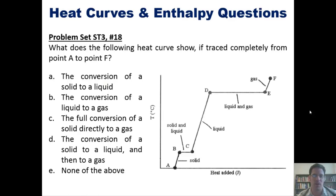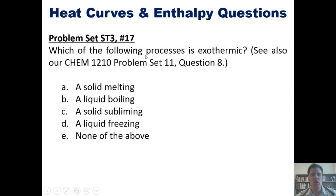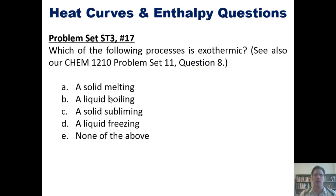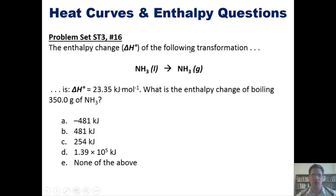I'm not going to answer that for you, but I invite you to think through it and come up with the answer on your own. Here's another question: which of the following processes is exothermic? Remember, exothermic processes give off heat. Think about whether a melting solid or a boiling liquid gives off heat or consumes it. Also: the enthalpy change ΔH° for converting liquid ammonia to gaseous ammonia is given as a positive number — what is the enthalpy change of boiling 350 grams of NH3? I'll post a link to a separate video where I work through that.